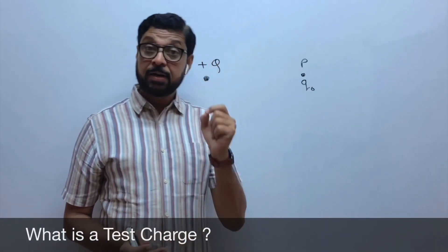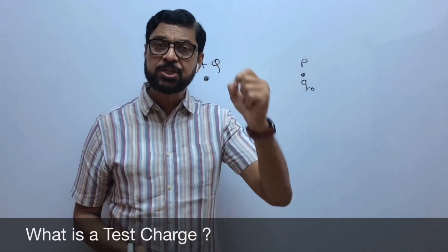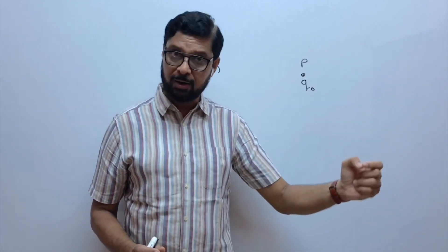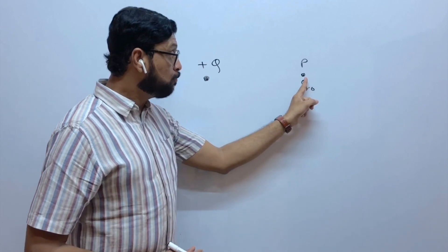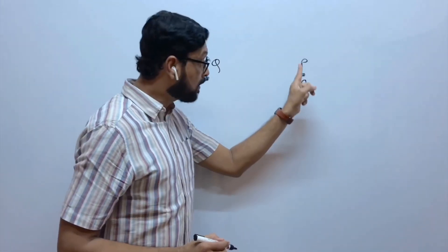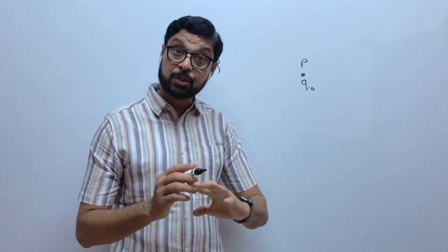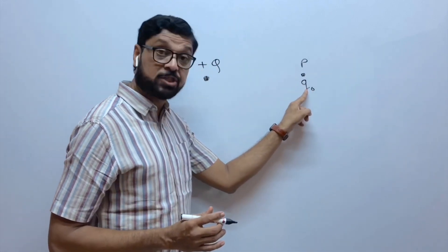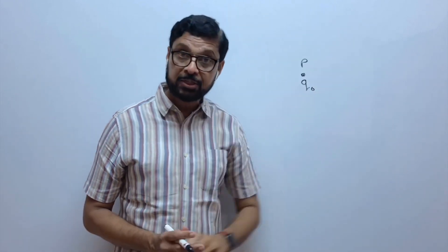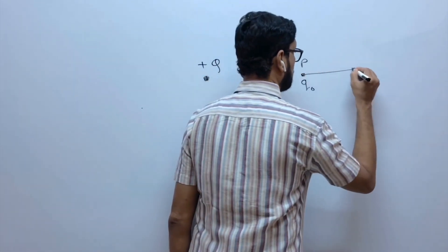What is a test charge? A test charge is a very small positive charge — vanishingly small, meaning nearly equal to zero, but not zero. Why do we take a very small charge? Because we are testing the strength of the electric field at this point — the electric field of capital Q. For testing that electric field, we keep a charge here. If this charge is big, it will have its own electric field, and that electric field will interfere with the original electric field. Therefore, we have to take a very small charge. As q0 is in the electric field, a force will act on it.